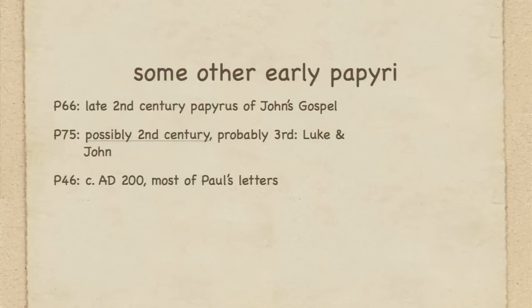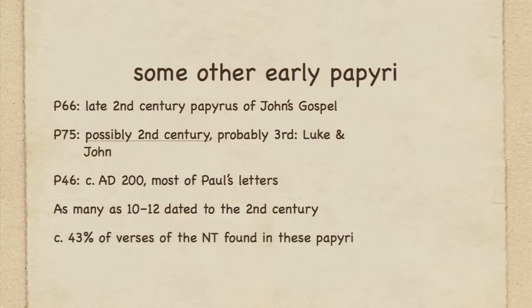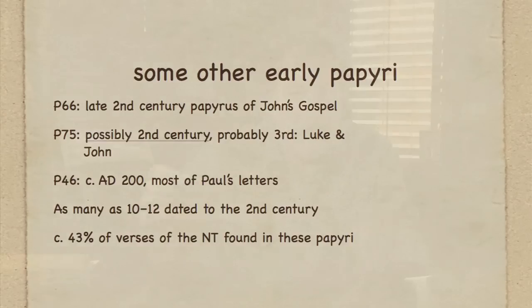Altogether, we have manuscripts from the second century — or possibly the second or third century — that number as many as ten or twelve manuscripts dated to about that time period. The remarkable thing is that approximately 43% of all the verses of the New Testament — not the entirety of each verse, but 43% of parts of those verses, and in most instances the majority of those verses — are found in these manuscripts dated to the second century or second/third century. That's an amazing amount of material very early on for the New Testament.